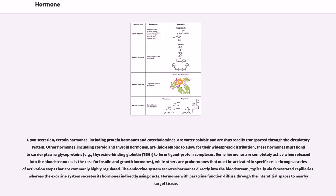Upon secretion, certain hormones, including protein hormones and catecholamines, are water-soluble and are thus readily transported through the circulatory system. Other hormones, including steroid and thyroid hormones, are lipid-soluble. To allow for their widespread distribution, these hormones must bond to carrier plasma glycoproteins, for example, thyroxine-binding globulin, TBG, to form ligand protein complexes.